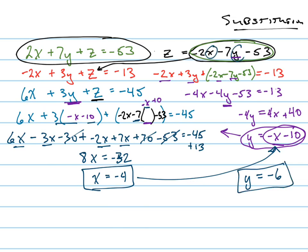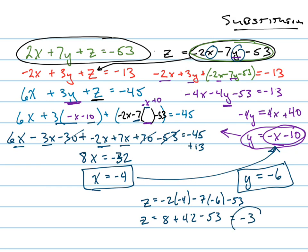And I can plug both of those into the original equation to get z. z equals negative two times negative four, minus seven times negative six, minus fifty-three. So z equals eight plus forty-two minus fifty-three. That's fifty minus fifty-three which is negative three. So the answers are x equals negative four, y equals negative six, z equals negative three. You can check by plugging those into all three equations — after all, three lines in three-dimensional space are all intersecting at one point in this instance.